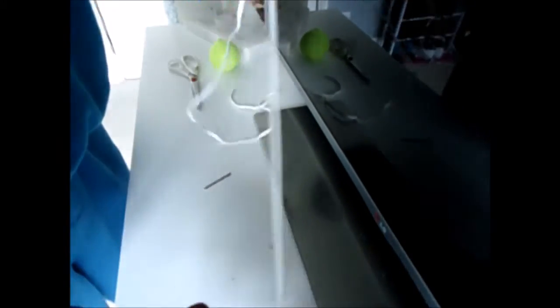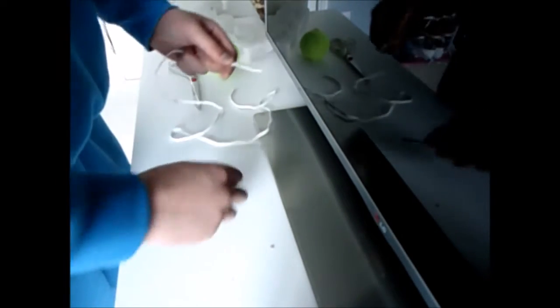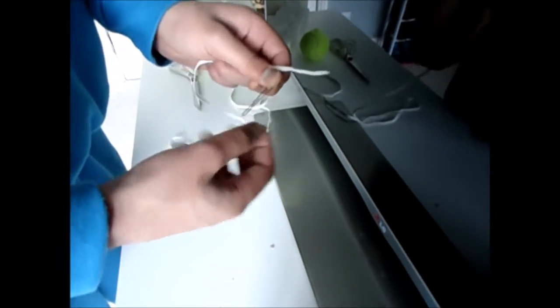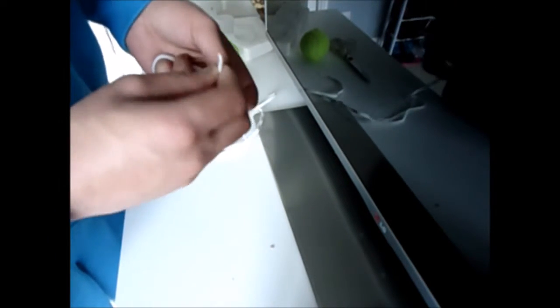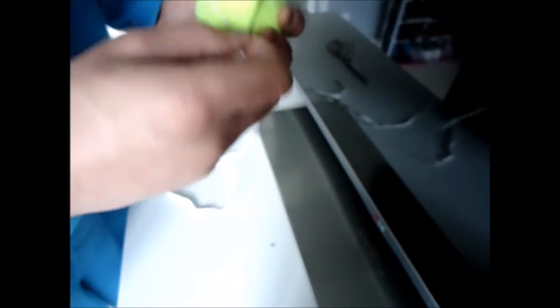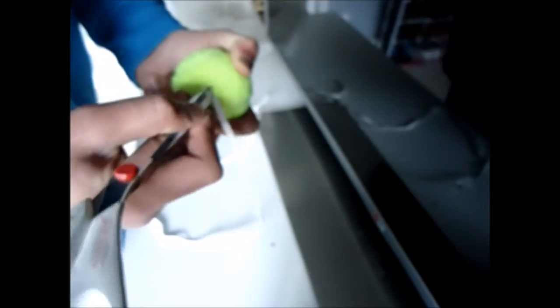Next, you're going to get your elastic and tie it to your hairpin in the centre of the hairpin. Make sure you tie it quite tight. Then, get the hairpin and thread it through the hole and push it all the way through. The hairpin will stop the elastic from coming out.